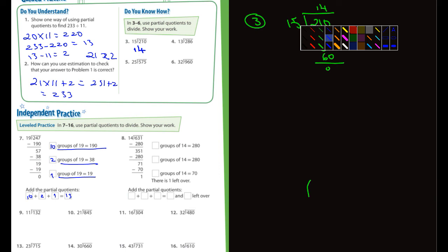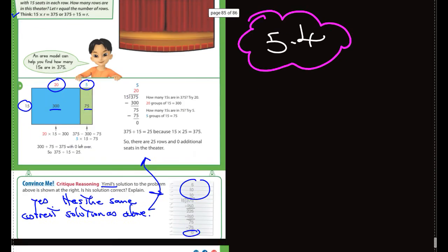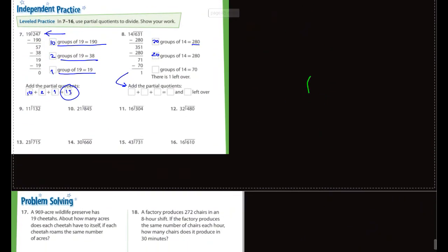And so then it says add the partial quotients. Let me move this up a little bit here so we can see a little bit better. Then it says add the partial quotients. Well, what are those? It's going to be 10, it's going to be 2, that's going to be 1 equals 13. So obviously the answer of 247 divided by 19 is 13. I'll get you started on this one. I'll let you guys finish it on your own. How many groups of 14 equals 280? Well, that's going to be 20.